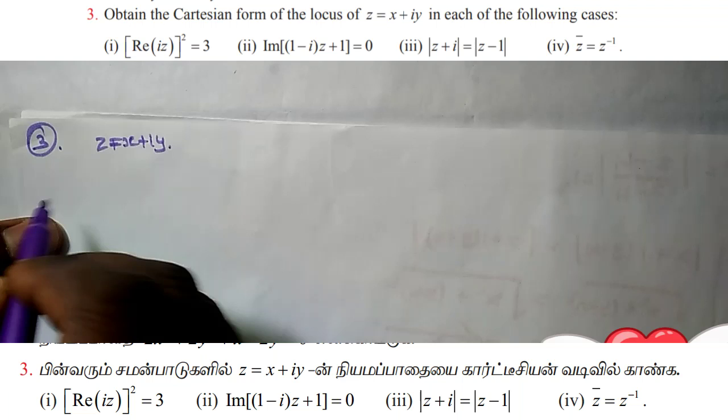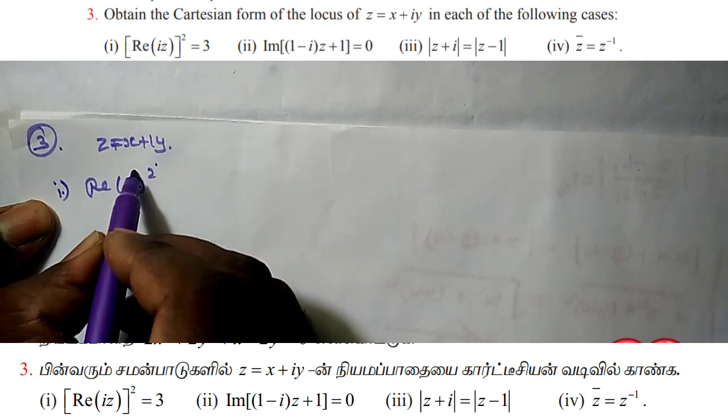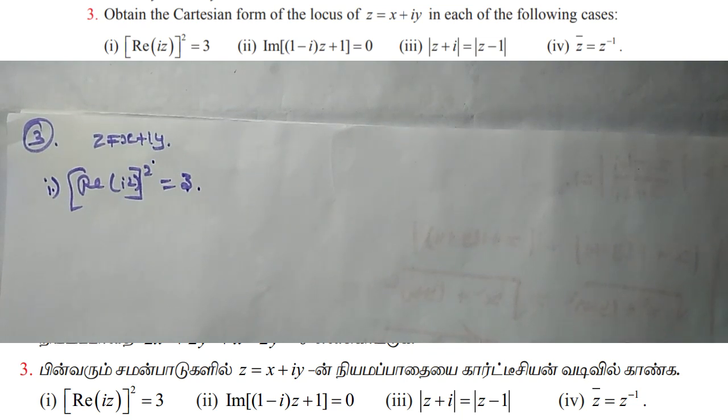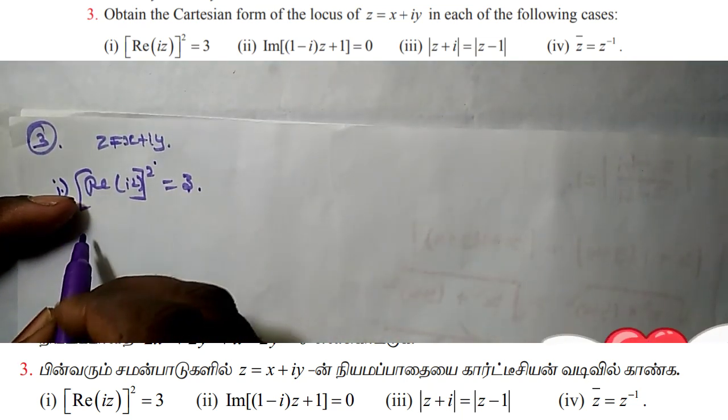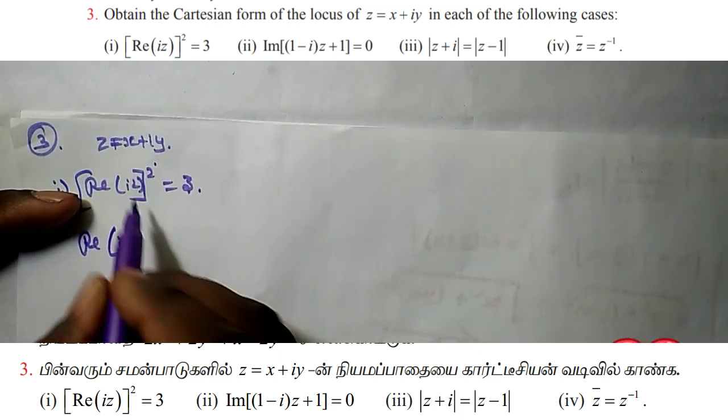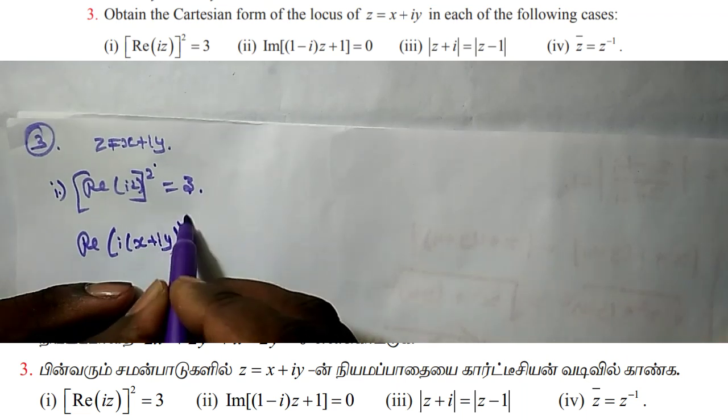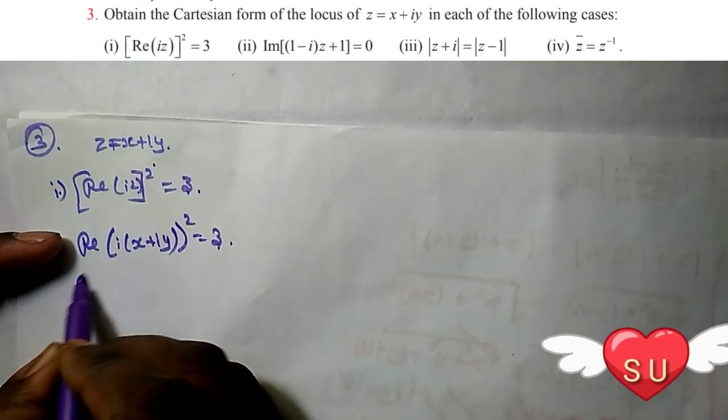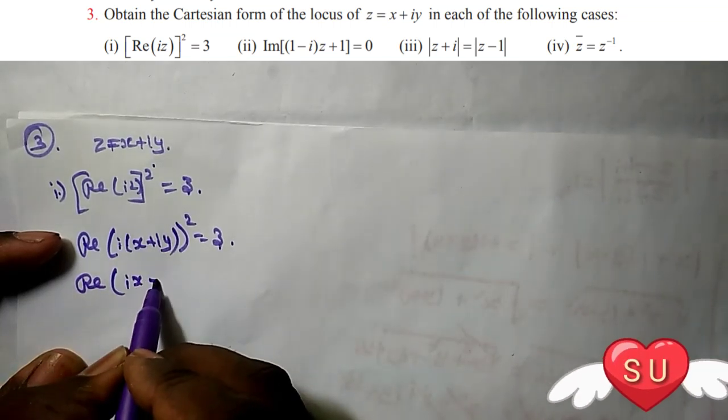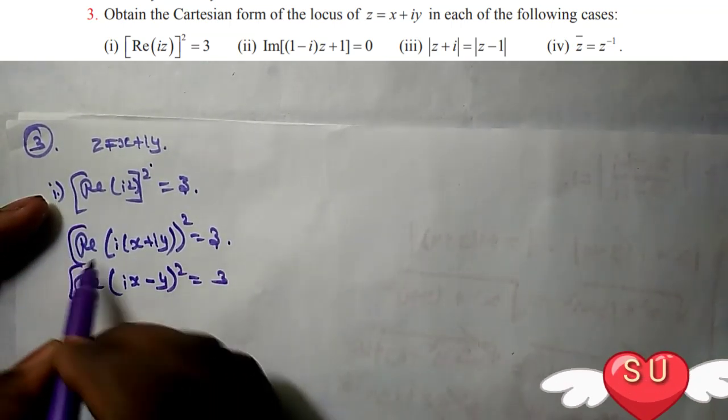First problem: Real of (iz)² equals 3. So real of iz, where z equals x plus iy, squared equals 3. Real of (ix plus i²y)² equals 3. Since i² equals minus 1, this becomes real of (ix minus y)² equals 3.